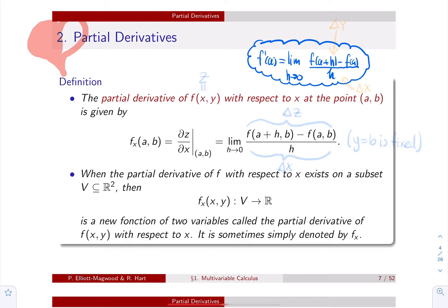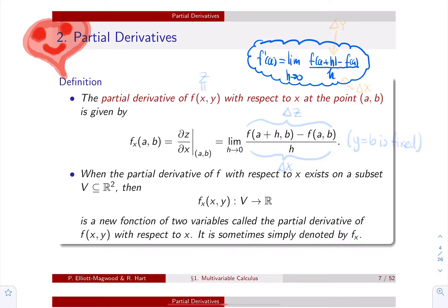In Calculus 1, when we study functions of one variable, derivatives are very important in order to study functions. You might remember that the first derivative of a function helps us decide if a function is increasing or decreasing, and the second derivative helps us decide if a function is concave up or concave down. There's a lot of information with derivatives, and derivatives are introduced using the following idea: how is the output changing if the input is changing a little bit? When you look at the formal limit definition of the derivative, f prime of a is equal to the limit as h goes to 0 of f of a plus h minus f of a over h.